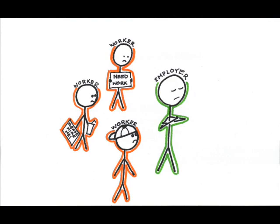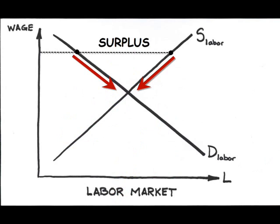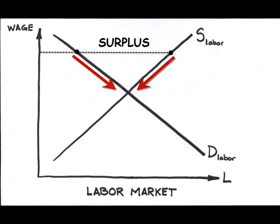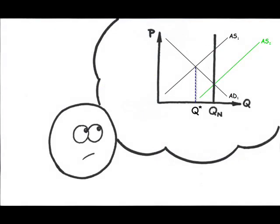In a free market for anything, even if that thing is labor, a surplus will correct itself as price falls. In this case, the price of labor, or the wage, falls. As labor gets cheaper, employers hire more labor, and aggregate supply shifts to the right.